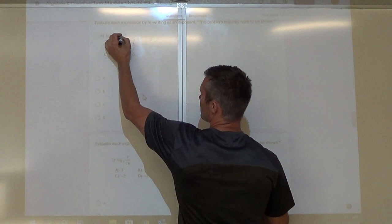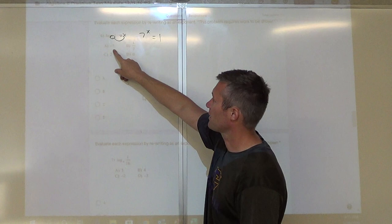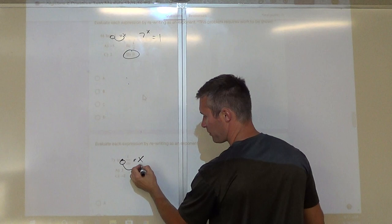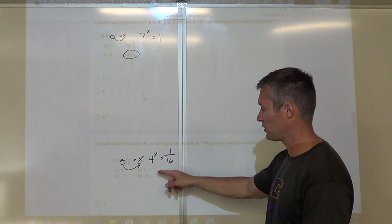The next set are all pretty similar — we want to know what a log expression equals. Set it equal to X and write in exponential form. For example, seven to the what power equals 1? Any number to the zero power equals 1, so the answer is D. Next, four to the what power equals 1/16? Anytime I get a fraction, it's going to be negative. Four to the second power equals 16, so since it's a fraction, it's negative 2 — answer is C.